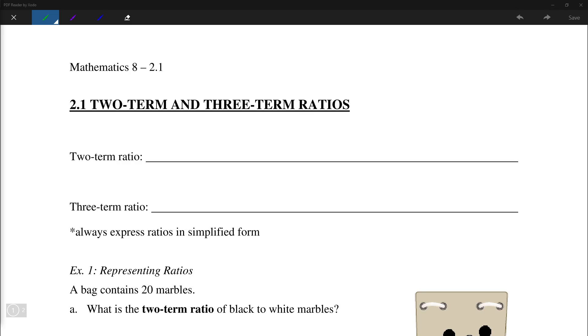Hello everyone, so today we're going to go over section 2.1, two-term and three-term ratios. So a two-term ratio is simply a comparison of two numbers with the same units.